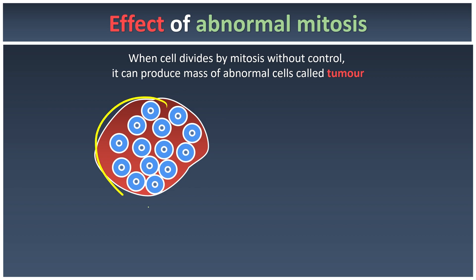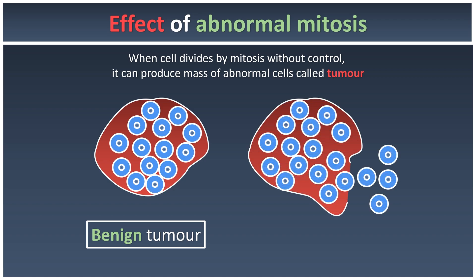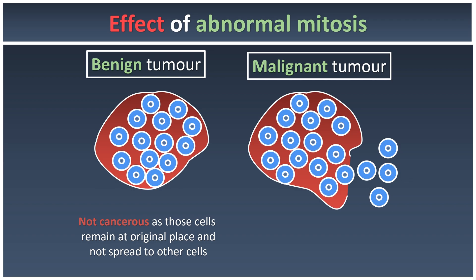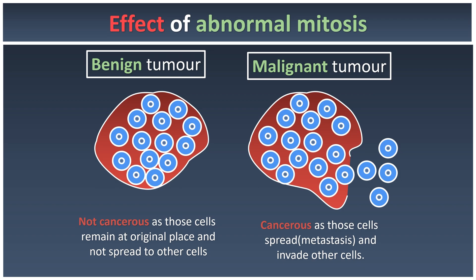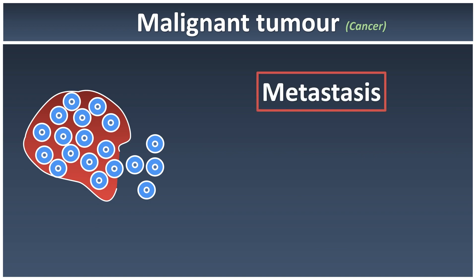When tumor cells remain confined to their local area, we call this a benign tumor — it is not considered very serious. However, when cells start to spread into other parts of the body, we call this a malignant tumor. Benign tumors are not cancerous because the cells remain at the original location and don't spread. Malignant tumors are cancerous — those cells spread and invade other cells.